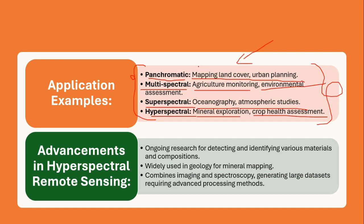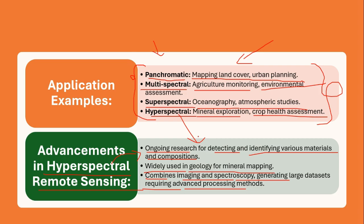There are ongoing research efforts for detecting and identifying various materials and compositions using hyperspectral images. It is widely used in geology for mineral mapping and combines imaging and spectroscopy to generate large datasets that require advanced processing methods. This concludes our discussion of the four sensor types within optical remote sensing.